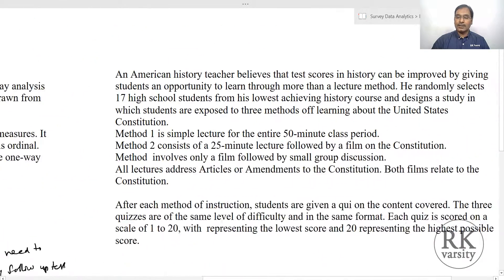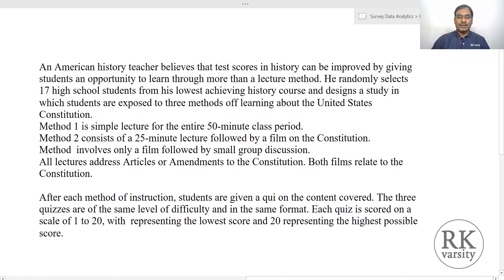Now here we have one example. An American history teacher believes that test scores in history can be improved by giving students an opportunity to learn through more than a lecture method. So the methods are three here: Method 1, Method 2, and Method 3. And students - that is your respondents - are 17, so your sample size is small. That is one reason for going for a non-parametric test, the Friedman's test. And second, you have three different methods which are not normally distributed. In Method 1, method one is a simple lecture for the entire 30-minute class period. Then Method 2 consists of a 25-minute lecture.